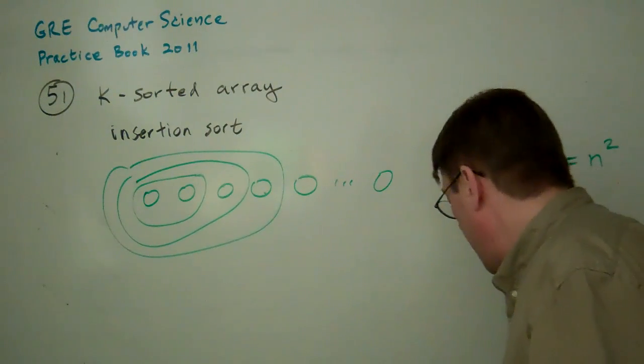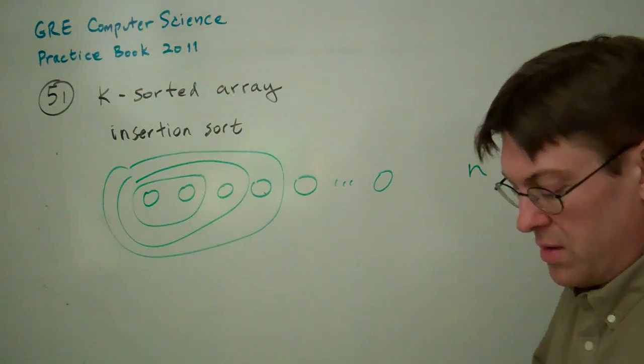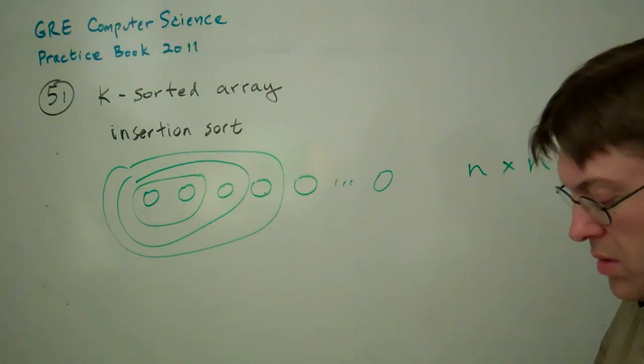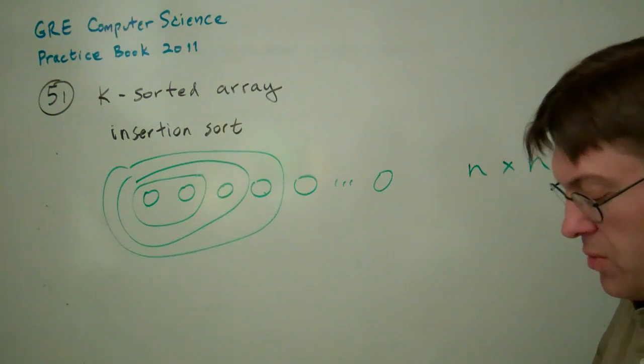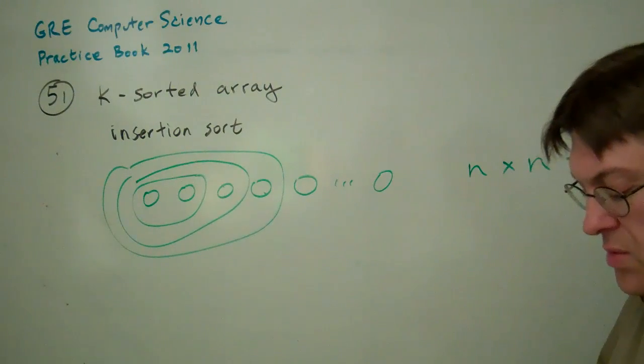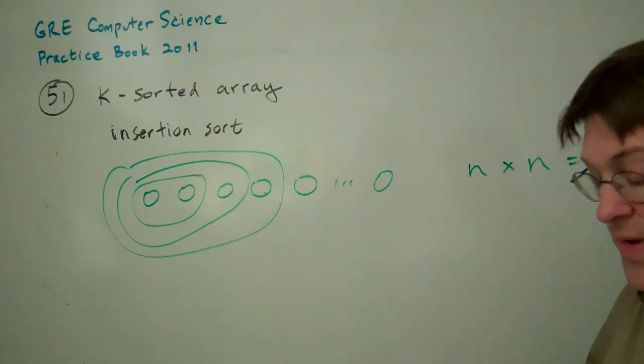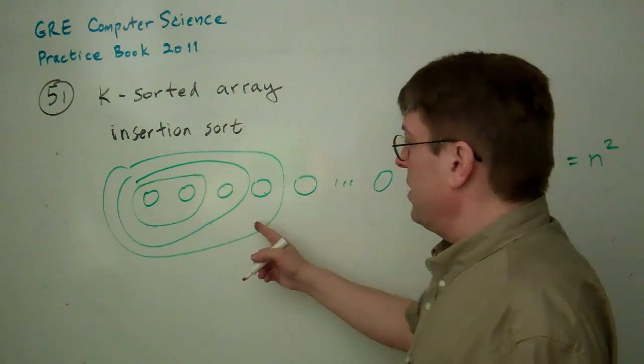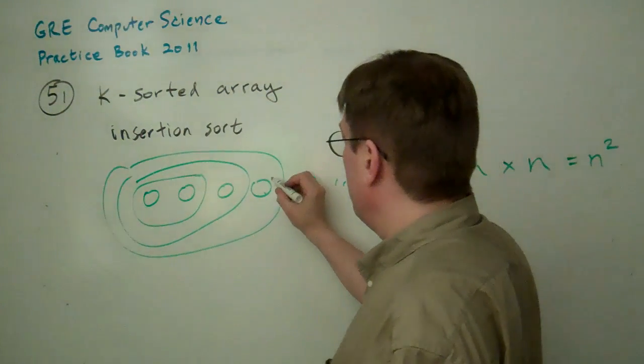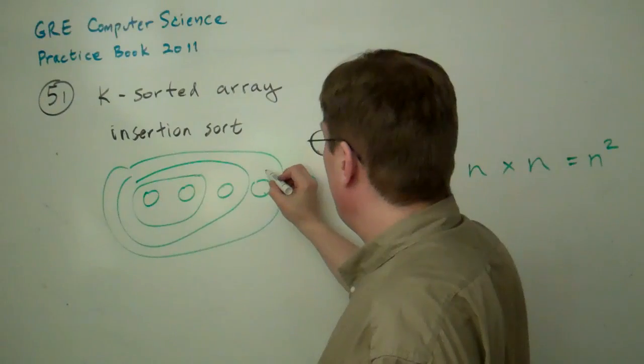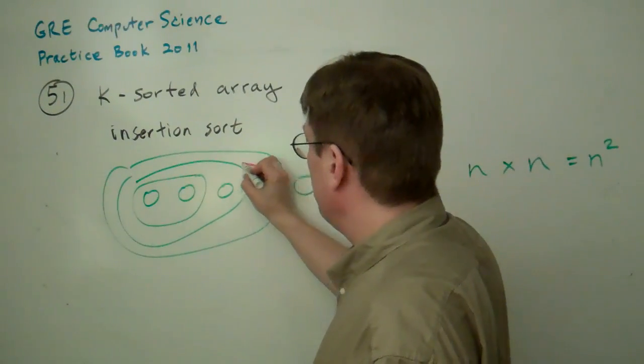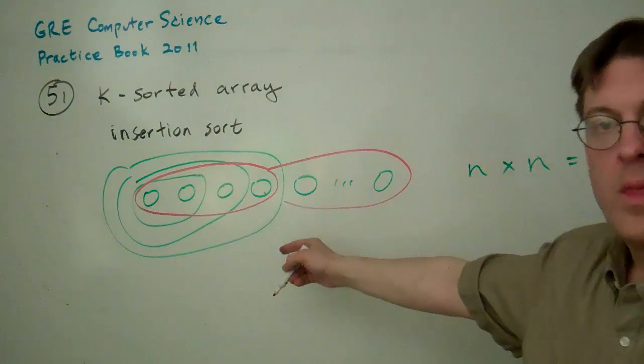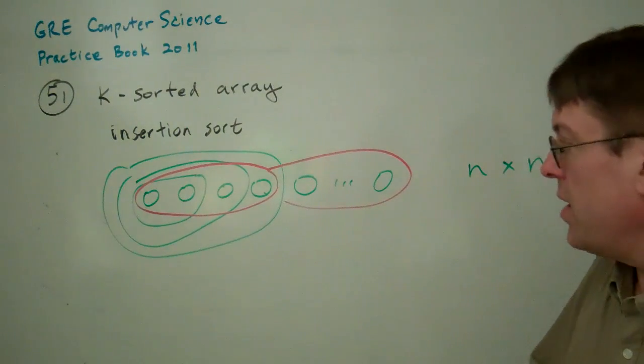But what if you only had to go k? It says here that any given element is no more than k locations away from its original position, or its final position in the sorted array. So, no matter what it is, let's say k was 3, this element here would be no more than 3 positions away from its final position in the array.